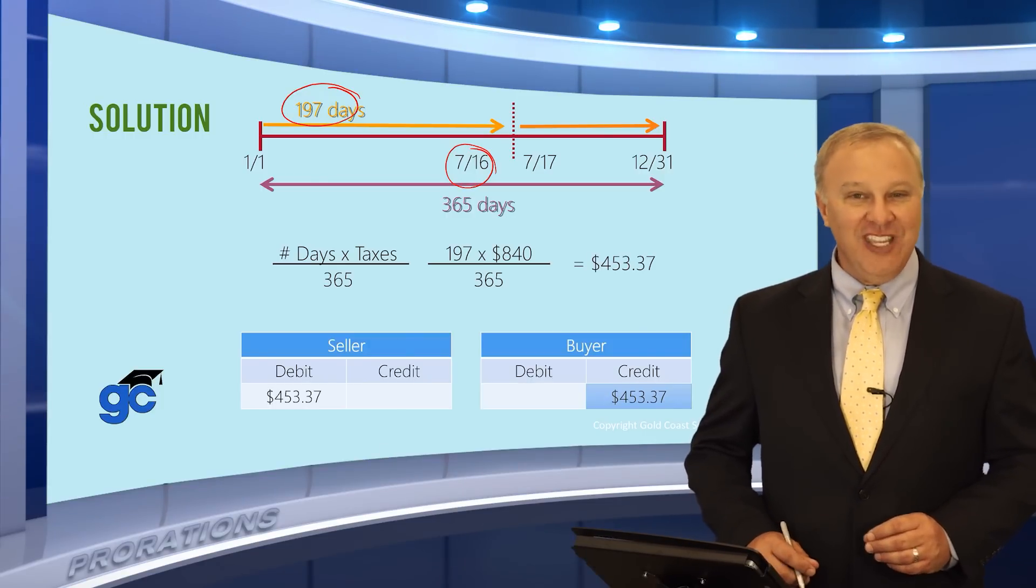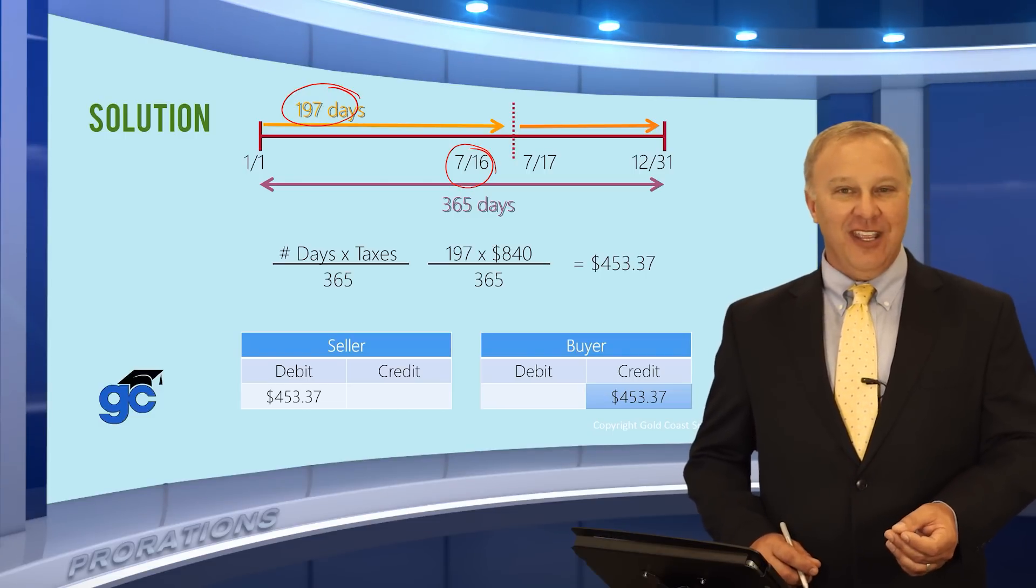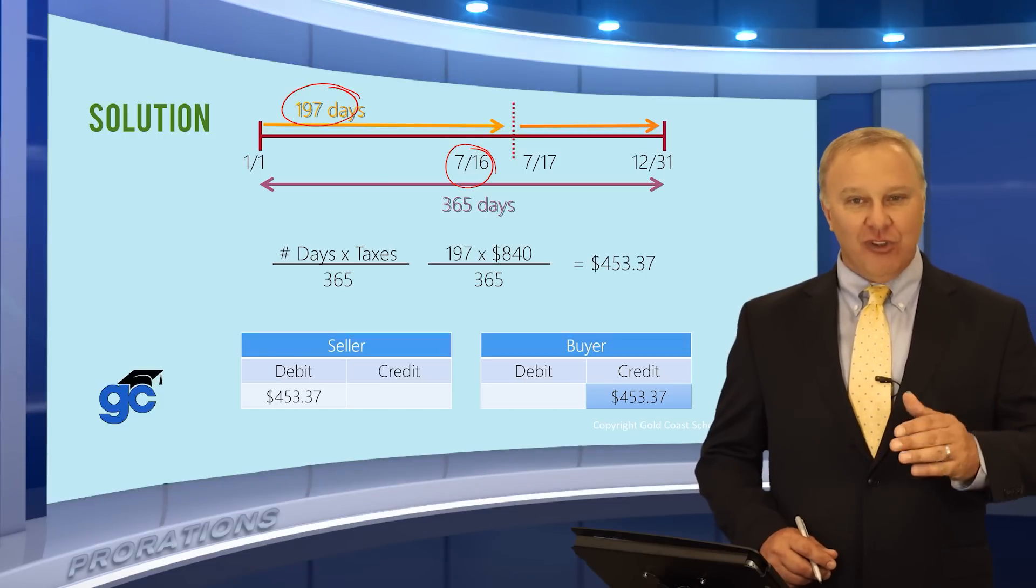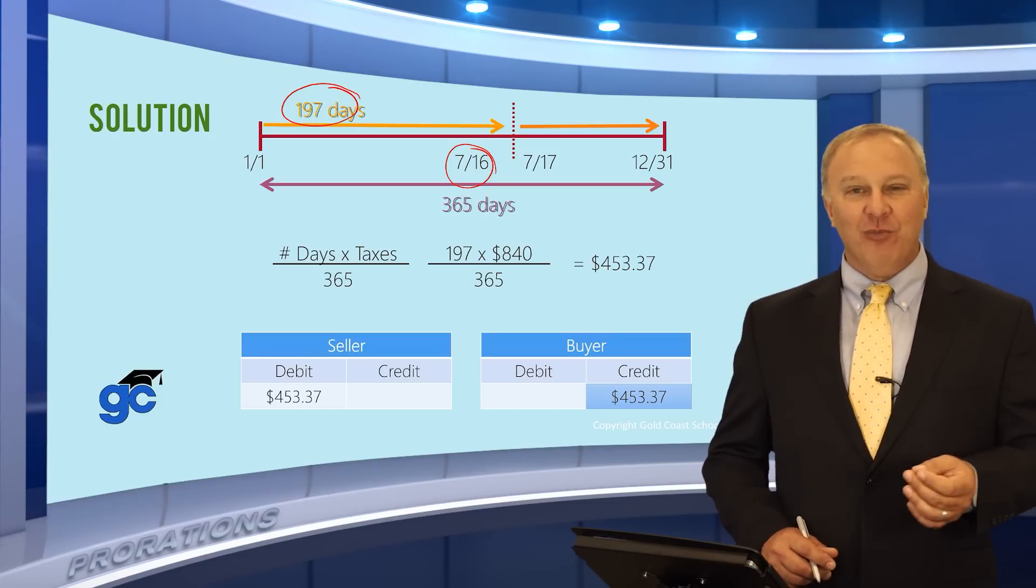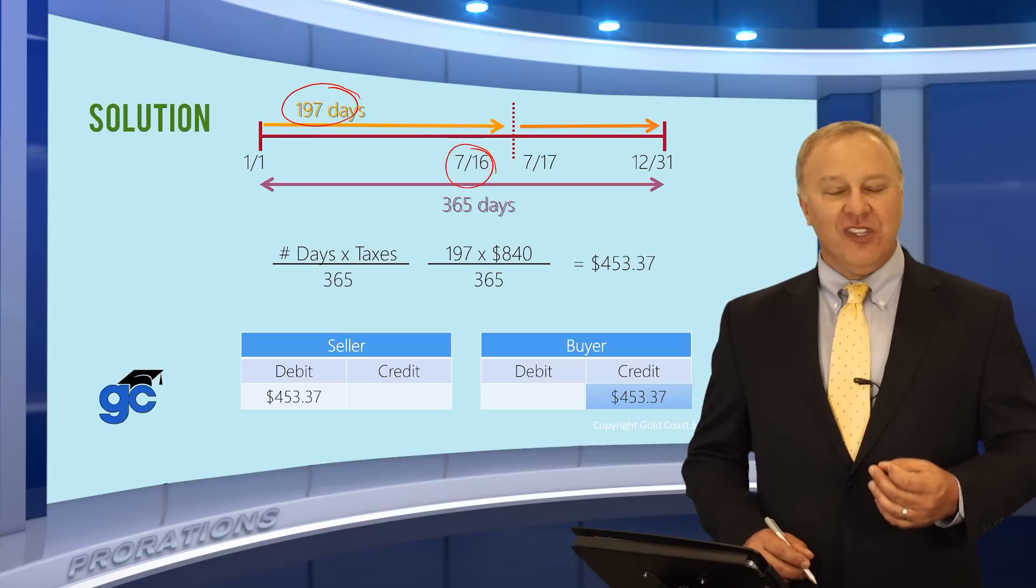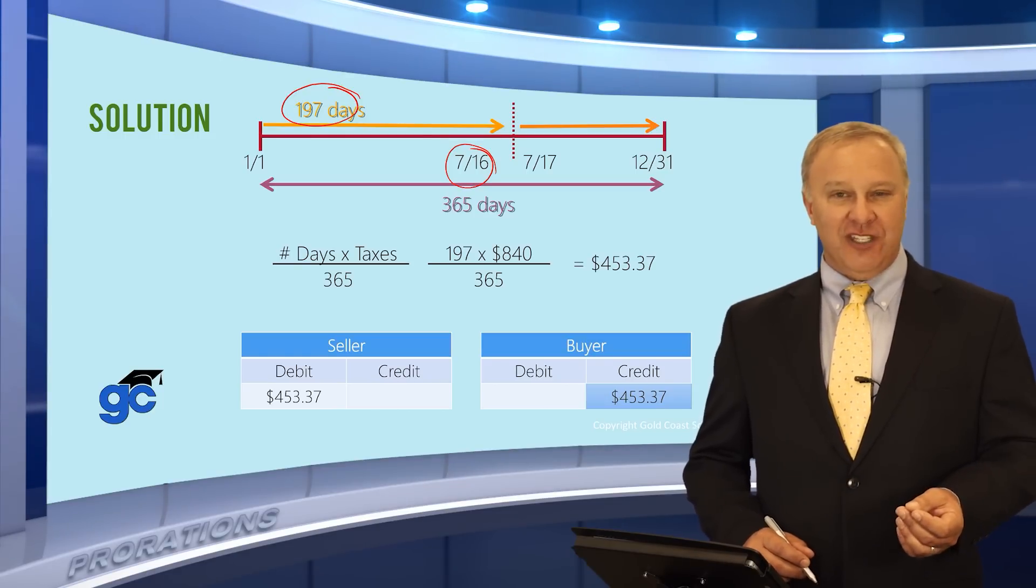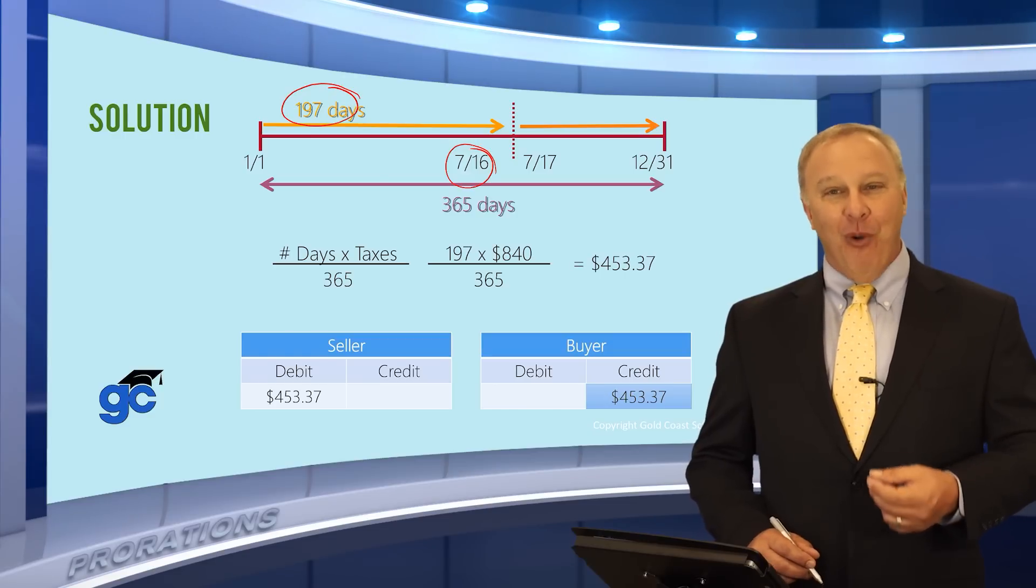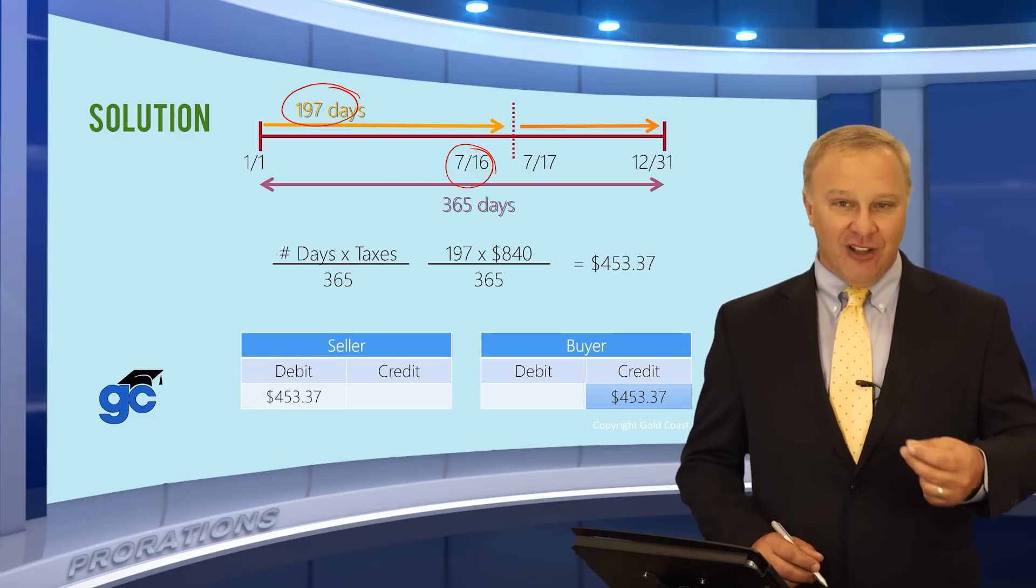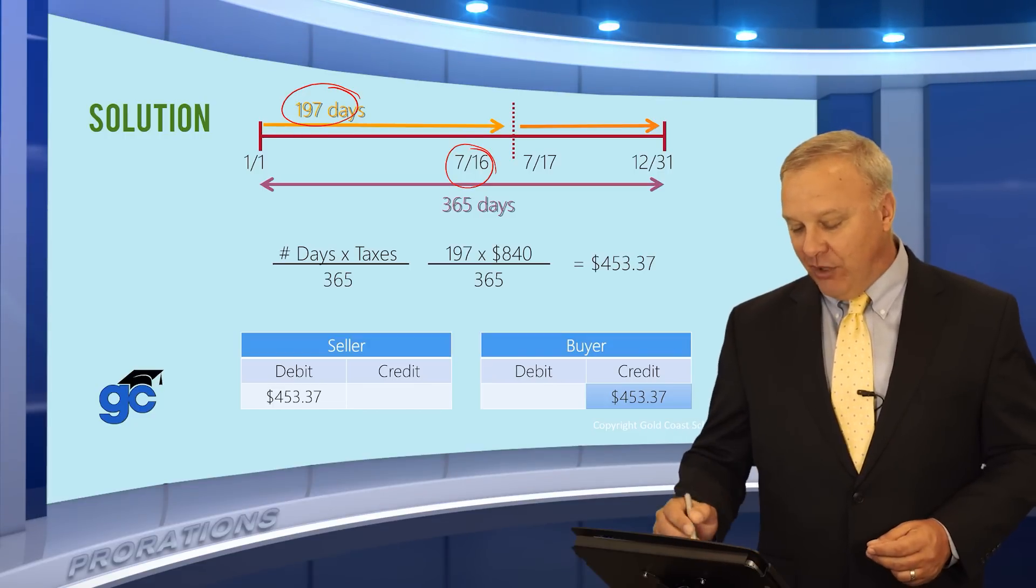Now the question is, who is paying and who is receiving? Well, since the taxes are paid in arrears, as of the closing date, the seller has not yet paid the taxes. When the bill comes, usually in November, the buyer is going to be responsible for the entire bill. So in this case, what's going to happen is at closing, the seller will pay the buyer for their portion of the taxes, which again, won't be due until November. But when the bill comes, the buyer will pay the entire bill. Obviously, they've already collected the money from the seller plus their own share, but they will pay the entire bill.